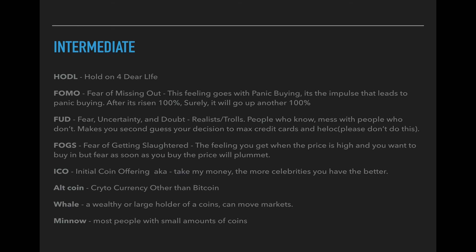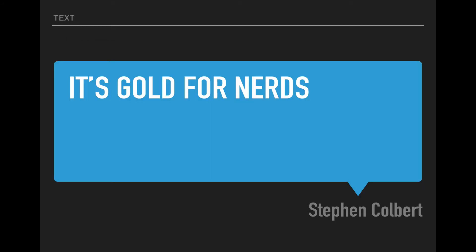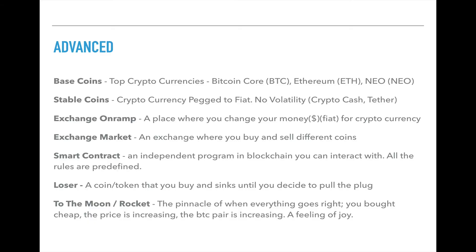Hopefully you're still with me. We're going to get to the last part, which is the advanced section. But before we get there, here's a quote by Stephen Colbert: 'Bitcoin or cryptocurrency is gold for nerds.' Coming from gold and silver, it is kind of nice to be able to move this kind of value around cheaply and fast, without having to sweat about shipping it in the mail. Alright, so the last section — we're getting to the advanced part, and this stuff you may or may not know.